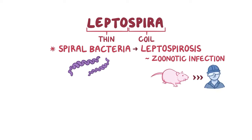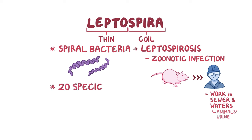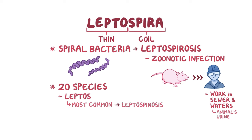This especially affects people who work in sewers and waters contaminated by these animals' urine. The leptospira genus has over 20 species, and the most common species that causes leptospirosis in humans is leptospira interrogans.